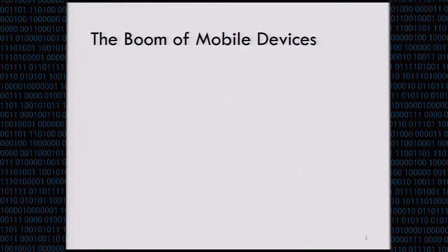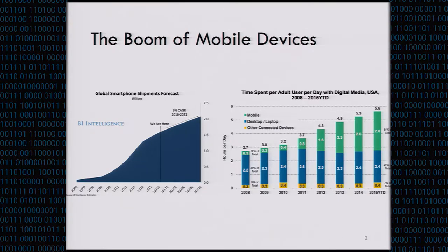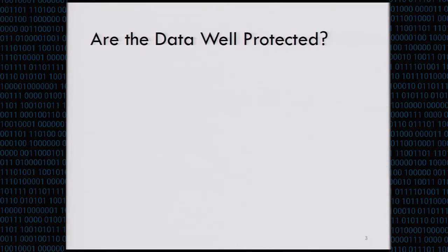So it is a mobile era now, and the global shipment of smartphones is estimated to reach 1.5 billion this year and 2 billion in 2020. Also, according to statistics, on average, people are spending nearly 3 hours every day with mobile devices. So that is about 10 times of what it was 7 years ago.